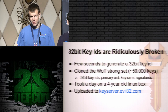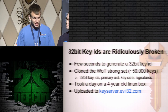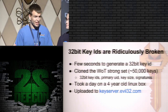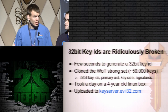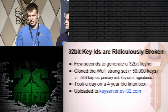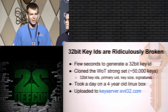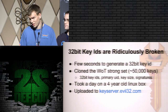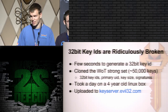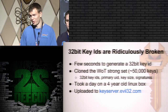So what are the implications? First off, 32-bit key IDs are ridiculously broken — they've been broken for some time, and you can do this on a CPU. On a GPU with our software it takes just a few seconds. To demonstrate how easy this is, we cloned the entire web of trust — about 50,000 keys — in one day on a four-year-old Bitcoin miner. You can check out our clone key server at keyserver.evil32.com.